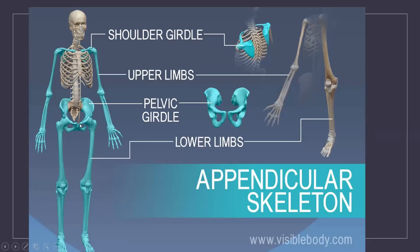In the appendicular skeleton, you will find all the bones away from the center. This is the center, and the appendicular skeleton will be in all these areas — your shoulder, pelvis, and lower limbs. All these areas you will find the appendicular skeleton.